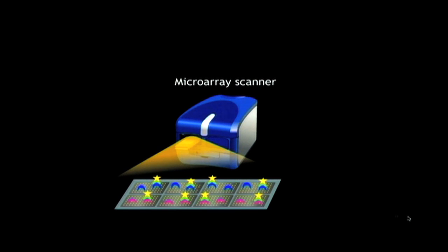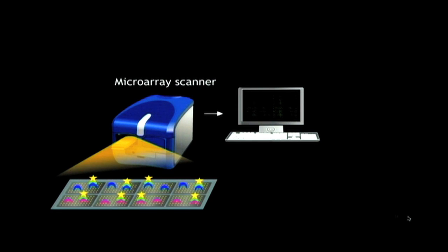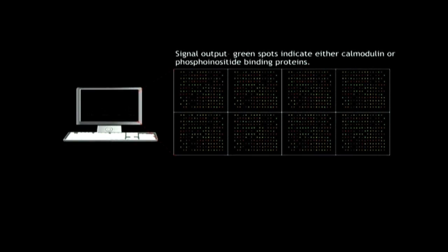The detection was carried out using Cy3-labeled streptavidin. Arrays were washed, dried, and then scanned using a microarray scanner. Six of the known calmodulin targets and 33 potential partners were identified, with 14 of these proteins possessing the consensus sequence. The phosphoinositide liposomes were able to identify 150 potential targets, of which 45 were found to be membrane-associated, predicted to have membrane spanning regions. This study testified the tremendous potential of using whole proteome arrays for the identification of new potential targets.